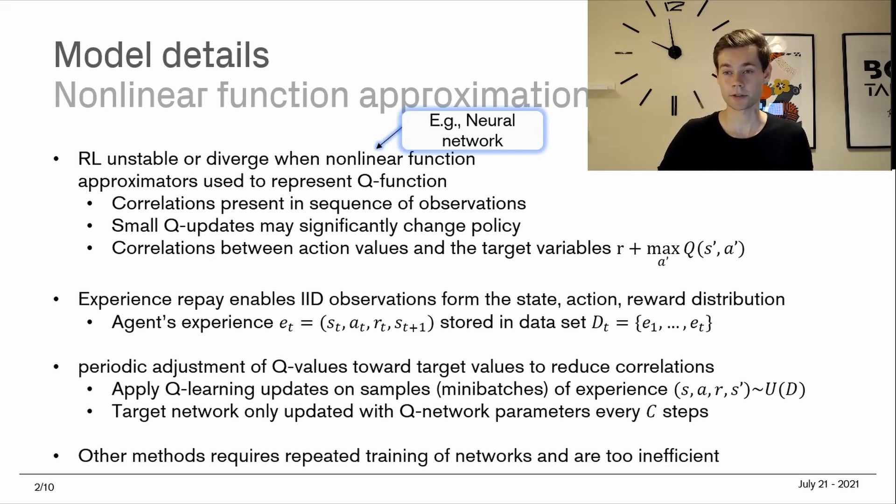Also, small Q updates may significantly change the policy. Remember that the policy is derived from the Q value function. If you have your Q value function telling you how good a particular action is from a state, if you maximize that, you basically get a greedy policy with respect to the Q value function.